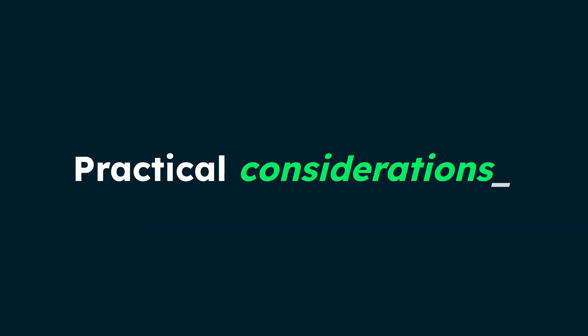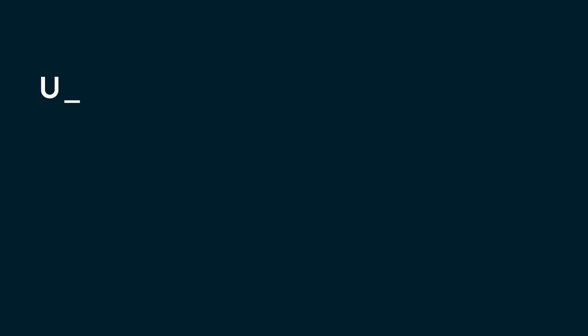MongoDB projects use DB Push for schema changes, as opposed to Prisma Migrate. MongoDB replica sets are required because Prisma ORM uses transactions to ensure data consistency, and transactions are not supported in MongoDB's single-node deployments.